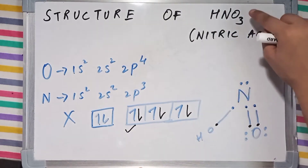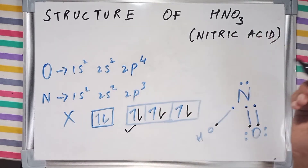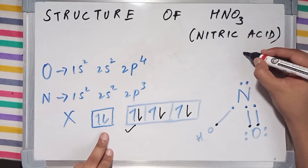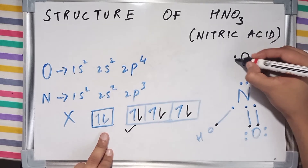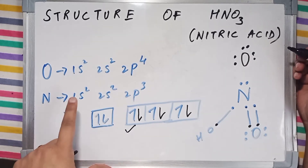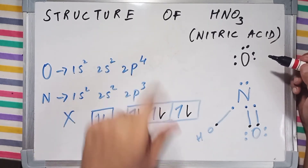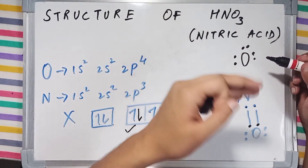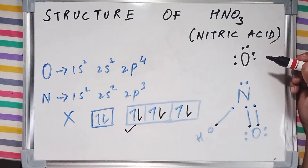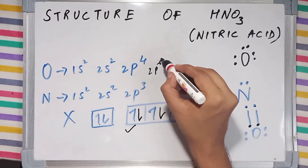We have two electrons left and one oxygen atom remaining. We used a single hydrogen atom and two oxygen atoms, but we have got another oxygen atom left. Oxygen has six valence electrons — 1, 2, 3, 4, 5, 6 (2 plus 4 = 6) — and it needs two more electrons to complete its octet, to have a configuration of 2p6.